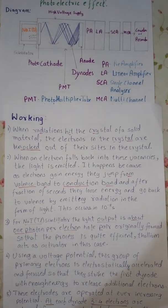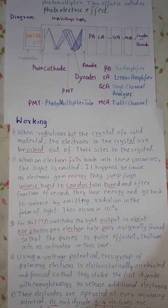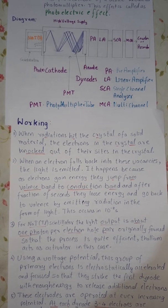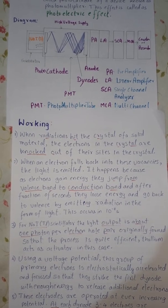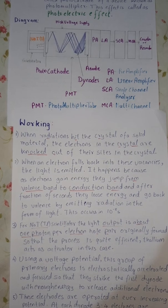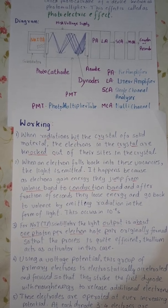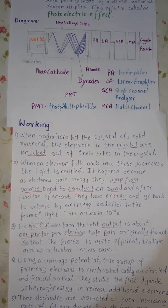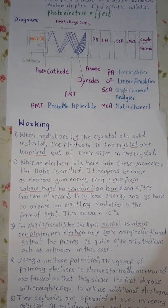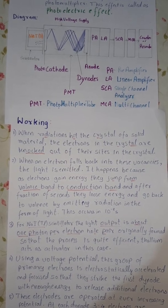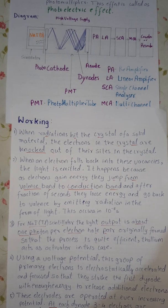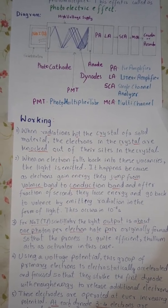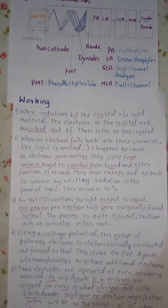Let us now see the working. When radiation hits the crystal of a solid material, the electrons in the crystal are knocked out of their sites in the crystal. When one electron falls back into these vacancies, the light is emitted. It happens because as electrons gain energy they jump from valence band to conduction band and after a fraction of seconds they lose energy and go back to valence band by emitting radiation in the form of light. All this process takes place in just 10 raised to minus 8 seconds.